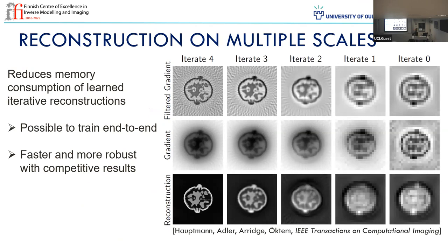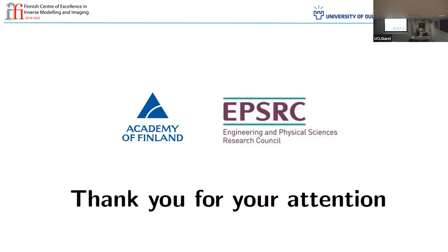The take-home message is: we can reduce memory consumption and make it end-to-end trainable if you don't require all iterates to be at the final resolution. Then we get faster, more robust reconstructions by doing that. Another line of research I'm interested in, especially in the photoacoustic case, is using cheaper approximate models on the finest scale to really cut down on computation time.